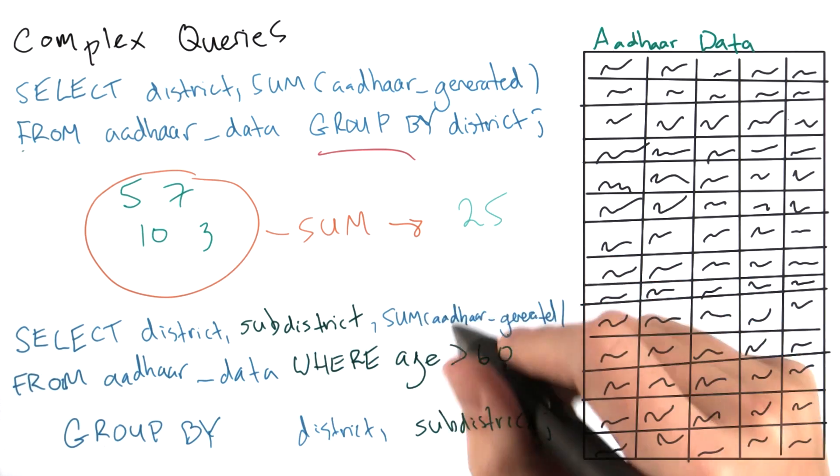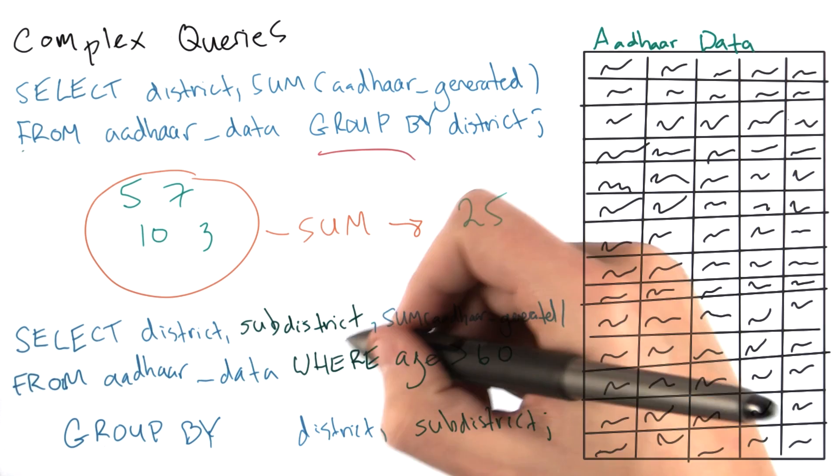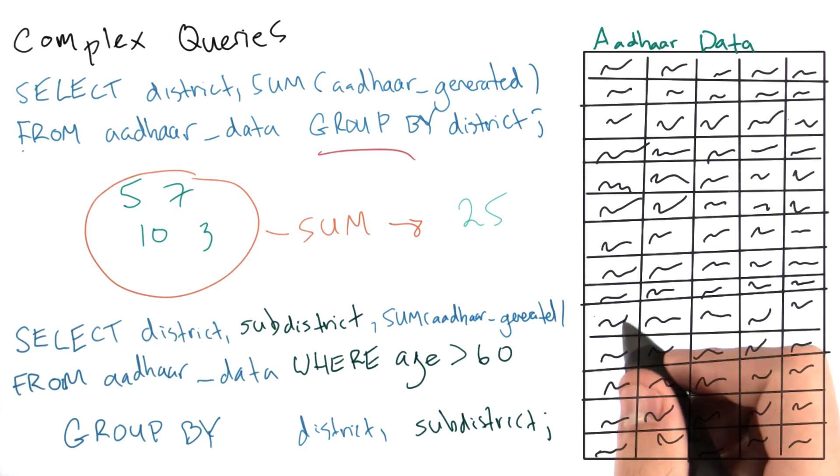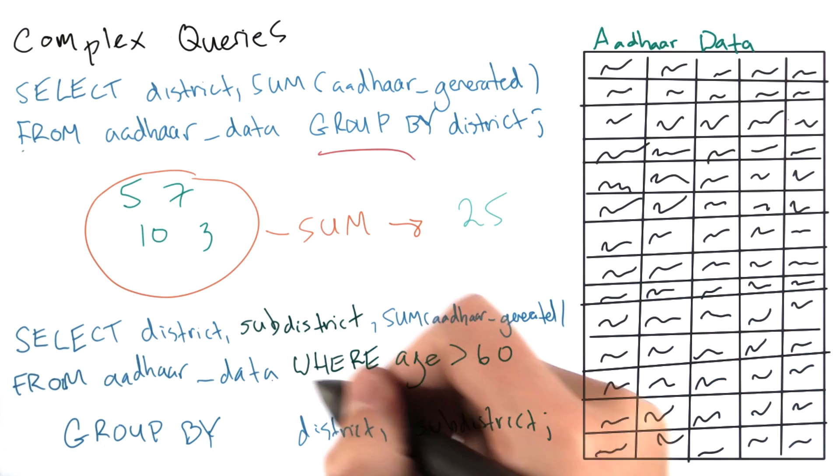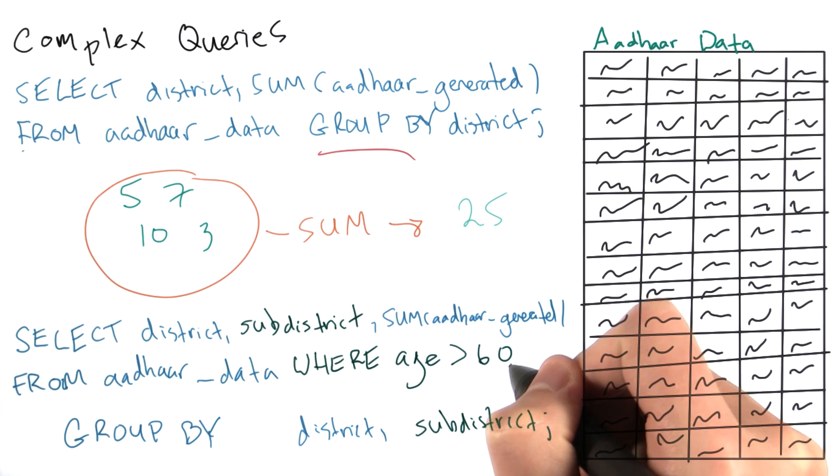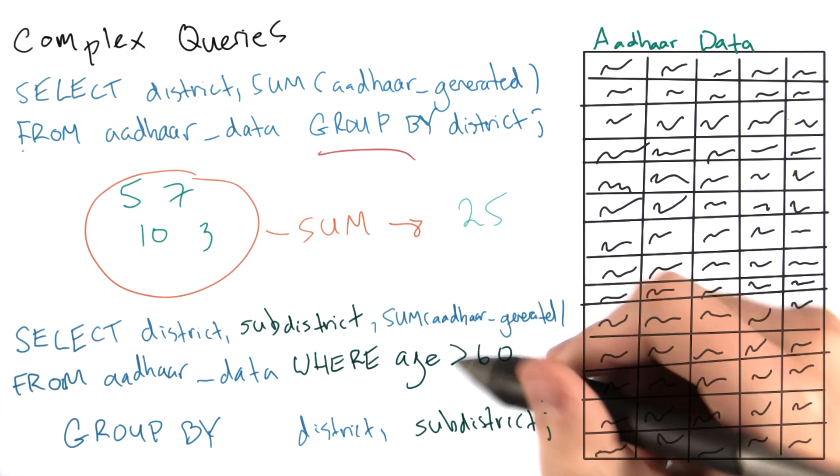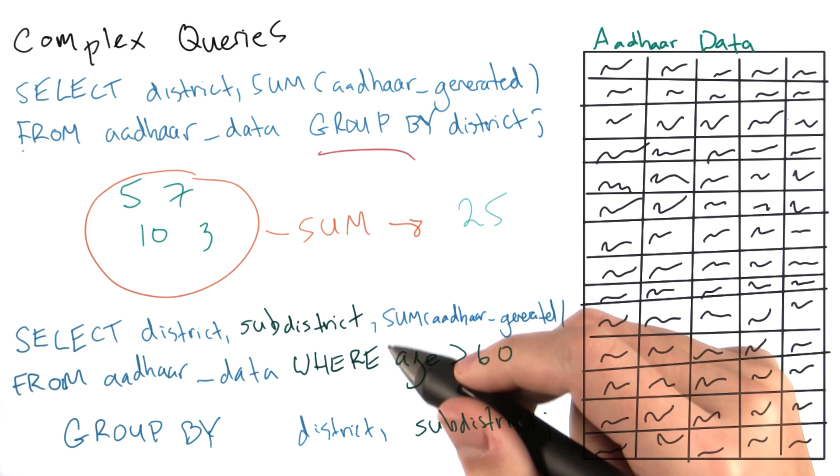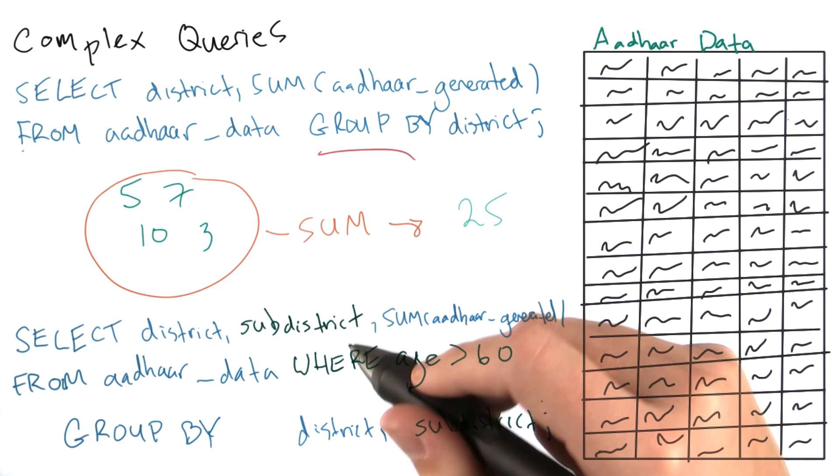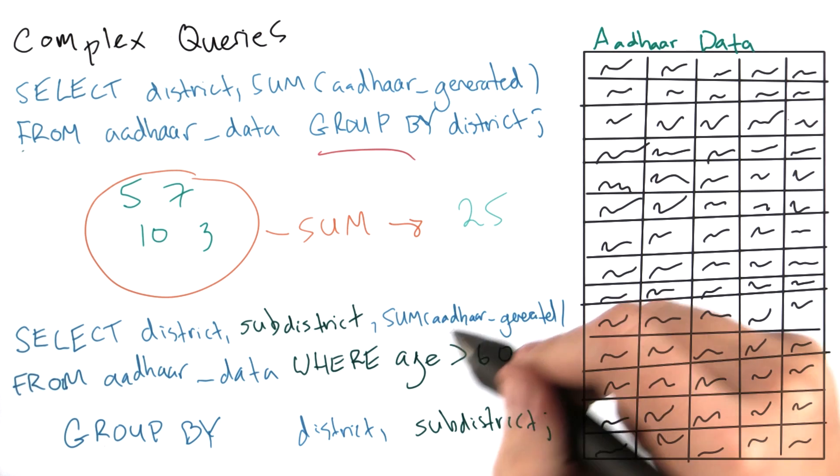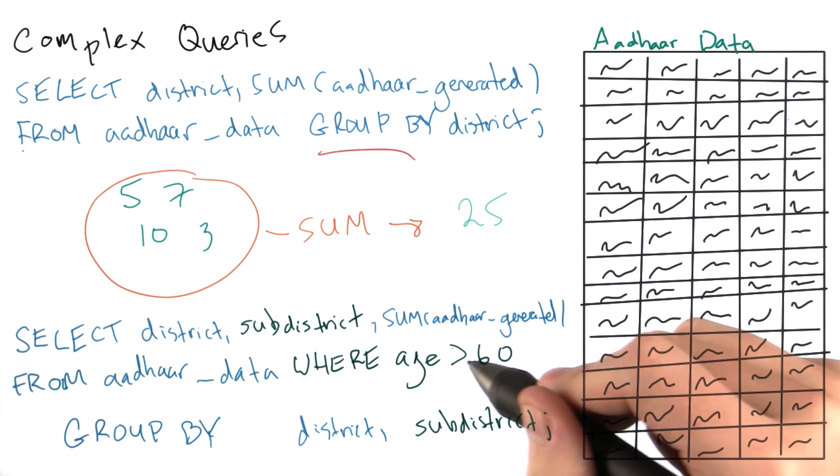If we were to run this query: SELECT district, sub-district, sum Aadhar generated FROM Aadhar data WHERE age greater than 60, GROUP BY district, sub-district - we would have a row for every combination of district and sub-district. And we would also have for each row a count of how many Aadhar were generated for people over the age of 60.